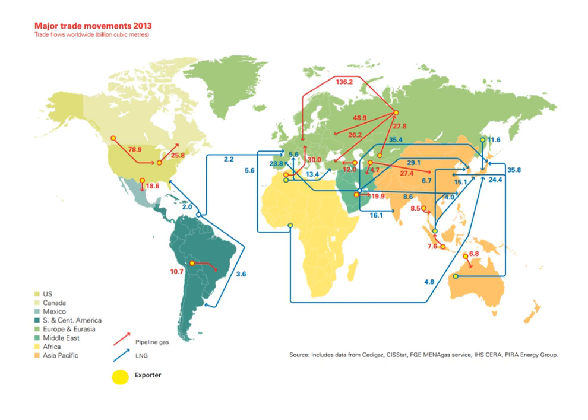Before natural gas can be used as a fuel, most, but not all, must be processed to remove impurities, including water, to meet the specifications of marketable natural gas. The byproducts of this processing include ethane, propane, butanes, pentanes, and higher molecular weight hydrocarbons, hydrogen sulfide which may be converted into pure sulfur, carbon dioxide, water vapor, and sometimes helium and nitrogen.